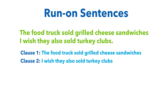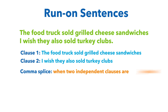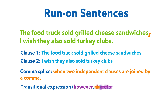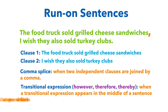Another example of a run-on sentence is a comma splice — that is when two independent clauses are joined by a comma: 'The food truck sold grilled cheese sandwiches, I wish they also sold turkey clubs.' Another example is when a transitional expression appears in the middle of a sentence without the correct punctuation.